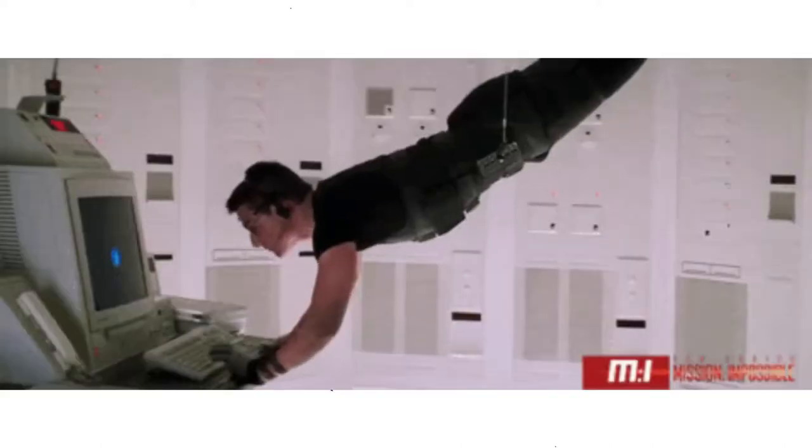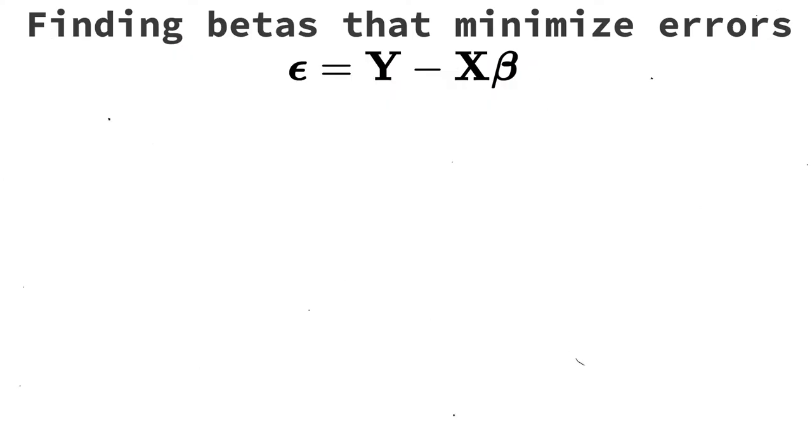So, the mission, should you choose to accept it, is to find the betas that result in the smallest overall error. So how do we go about finding the betas that result in the smallest overall error? Here's a few options.